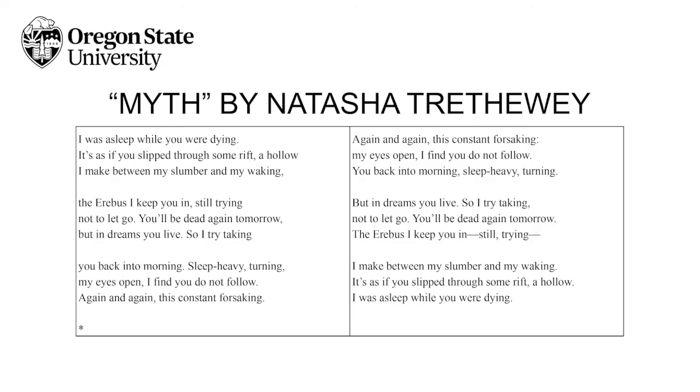Something about the formal juxtaposition of the two sections brings our attention to the recurrence of the poet's grief. Just look at the last line of the first section on the left, at the bottom, and the first line of the second section on the right, at the top: "Again and again, this constant forsaking. Again and again, this constant forsaking." That's so painful, that repetition — the energy of abandonment and renunciation and relinquishment. But in the first instance, it's the mother forsaking the daughter, and in the second instance, it's the daughter feeling that she's forsaking the mother. The two difficult emotions are placed in juxtaposition, even using the same words.